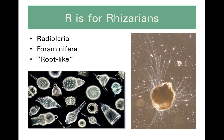So that's the end of the alveolates. And now onto R, which is for Rhizarians in our SAR clade. Rhizarian means root-like. If you look at this foram here, you can see it's got these specialized pseudopodia that kind of look like little roots under the microscope.